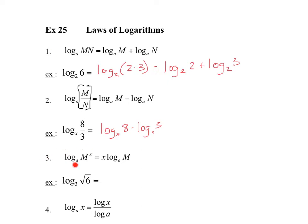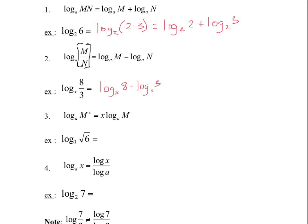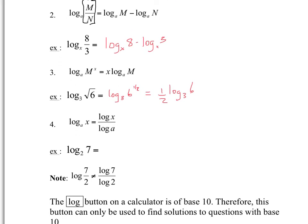The third law is called the power rule. When you have an exponent on the argument — for example log base a of m to the power of x — that exponent x can become the coefficient of the logarithm, moving out in front: x log base a of m. For example, log base 3 of the square root of 6 equals log base 3 of 6 to the power of one half, and bringing the exponent out front gives one half log base 3 of 6.